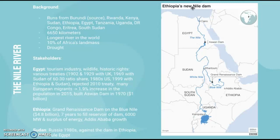The key stakeholders are Egypt, Ethiopia, and Sudan. Other countries are obviously stakeholders too, but these three don't have as much influence in the debates over the Nile. Let's look at each stakeholder's perspective.